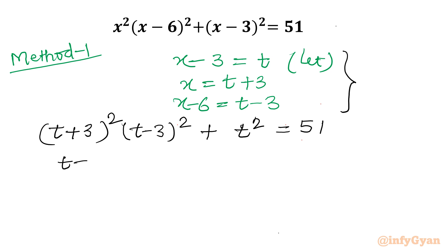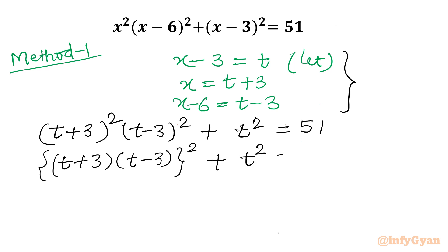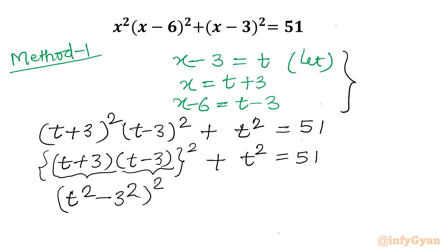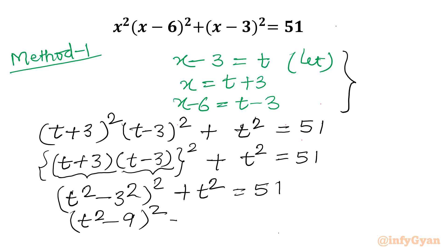Now here I can write (t+3)(t-3) in the bracket, and then put power 2, plus t² equals 51. This is the a plus b, a minus b — difference of two squares formula. I can straight away write (t²-3²)² plus t² equals 51, which is (t²-9)² plus t² equals 51.